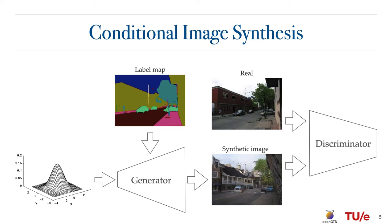On the other hand, generative adversarial networks, or GANs, are very popular these days to synthesize realistic-looking images. In conditional GANs, certain input data is used as the input of the generator to provide more guidance and semantic information for the image generation.